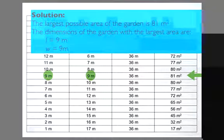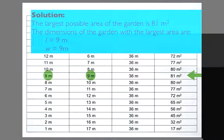So here's our solution. The largest possible area of the garden is 81 meters squared. The dimensions of the garden with the largest area are length equals 9 meters and width equals 9 meters.